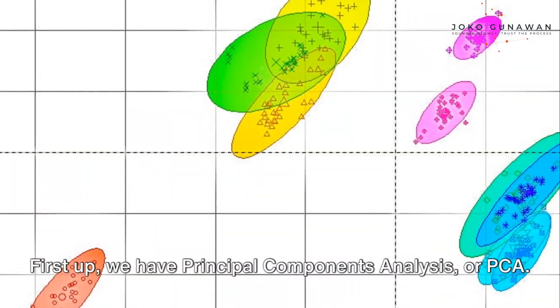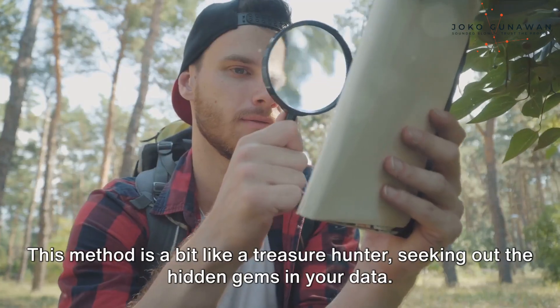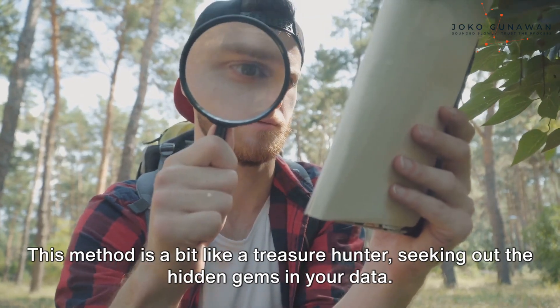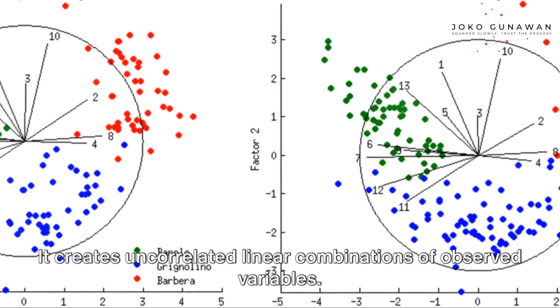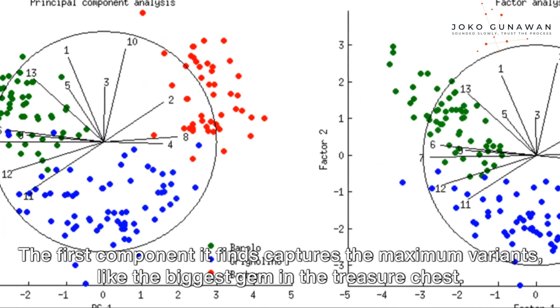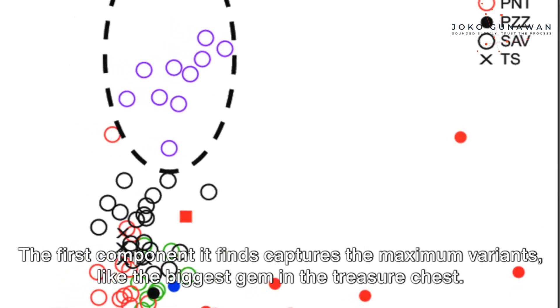First up, we have Principal Components Analysis, or PCA. This method is a bit like a treasure hunter seeking out the hidden gems in your data. It creates uncorrelated linear combinations of observed variables. The first component it finds captures the maximum variance, like the biggest gem in the treasure chest.